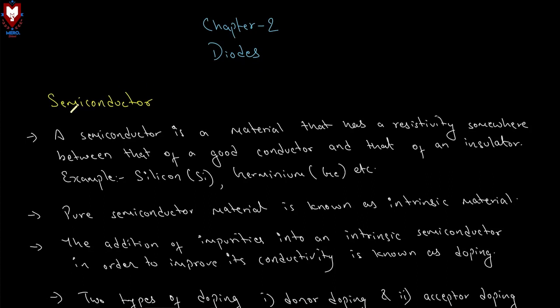What is a semiconductor? A semiconductor is a material that has a resistivity somewhere between that of a good conductor and that of an insulator.